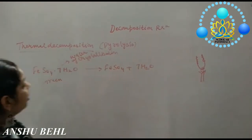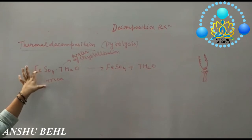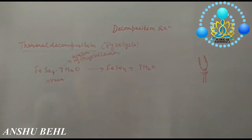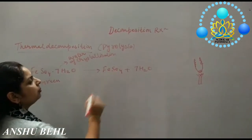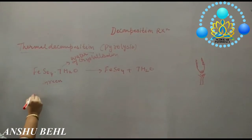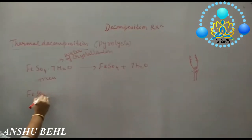And color of this Ferrous Sulphate which was green will turn to white. It will become colorless. After that, again on heating, it will start breaking up into further molecules.